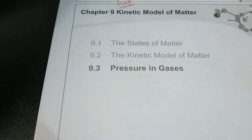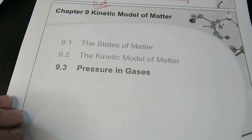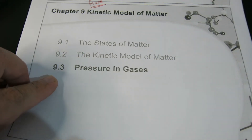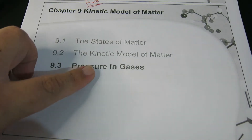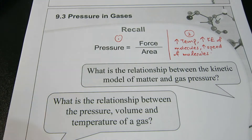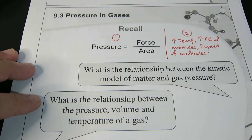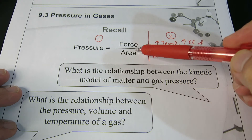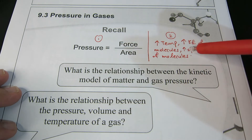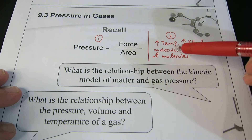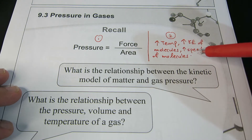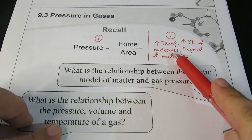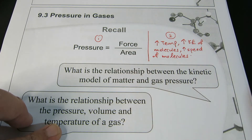We come to the last part — the biggest one. For combined science students, this is where the chapter ends; you don't need to go into section 9.3. For pure physics students, you will follow through with this. So, pressure in gases. Two things you need to recall: first, pressure is force per unit area. Second, the higher the temperature, the higher the kinetic energy of the molecules, and therefore the higher the speed of those molecules.